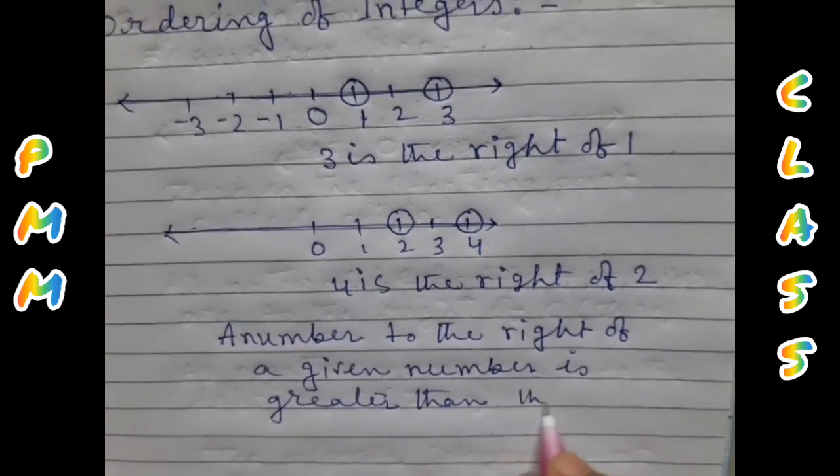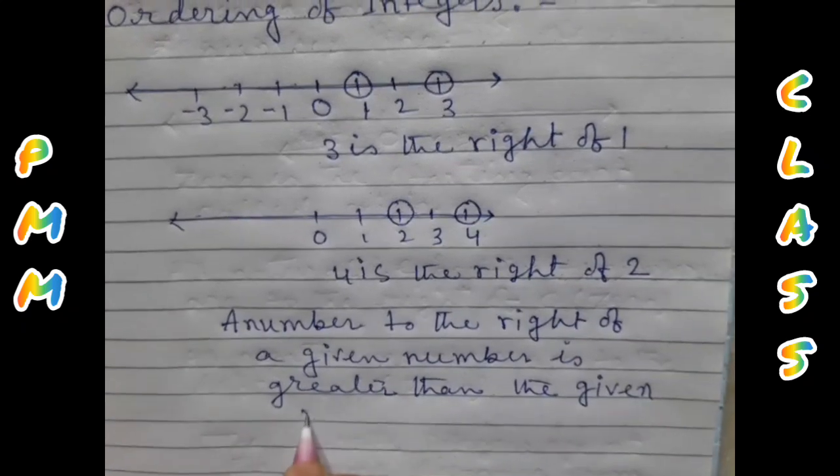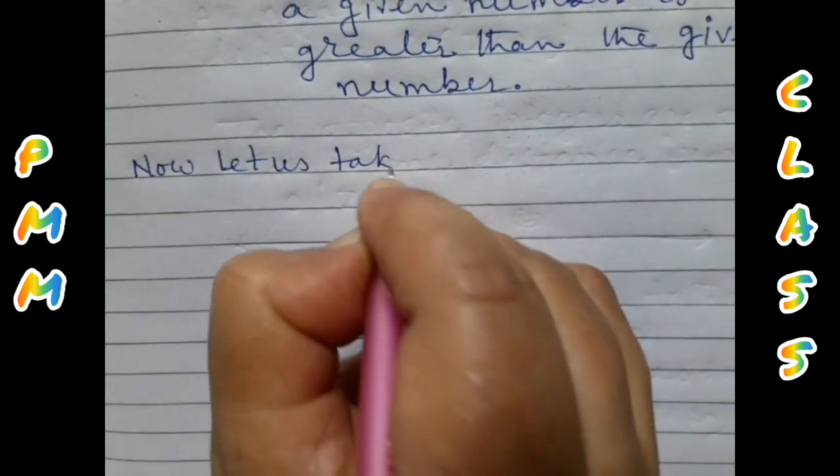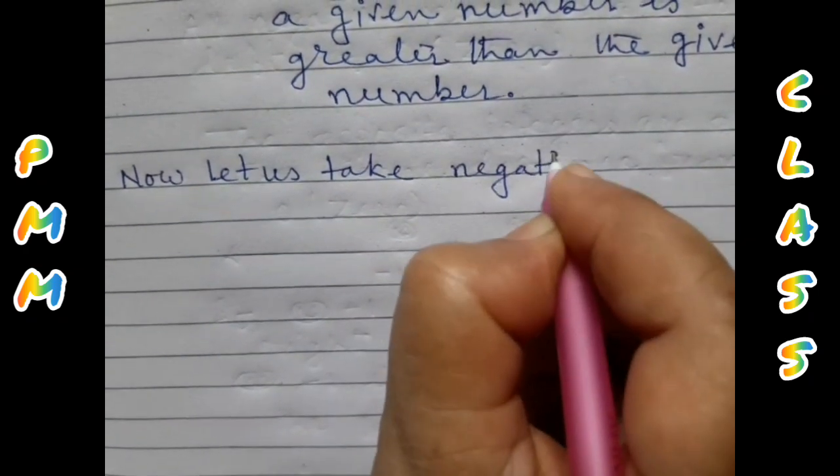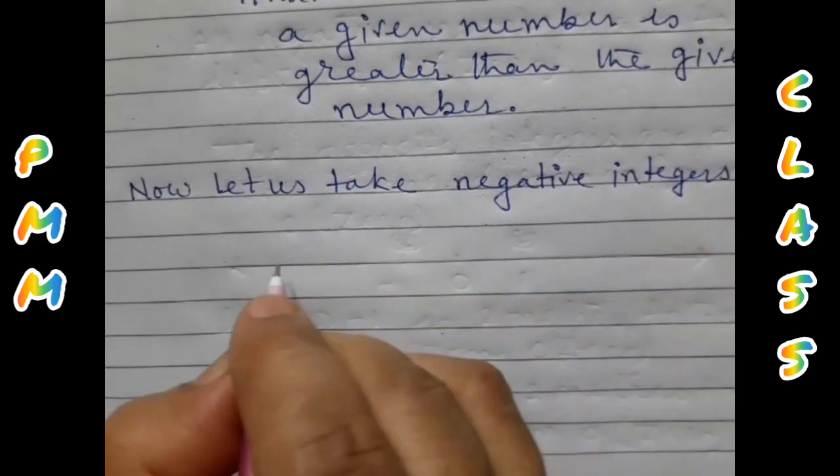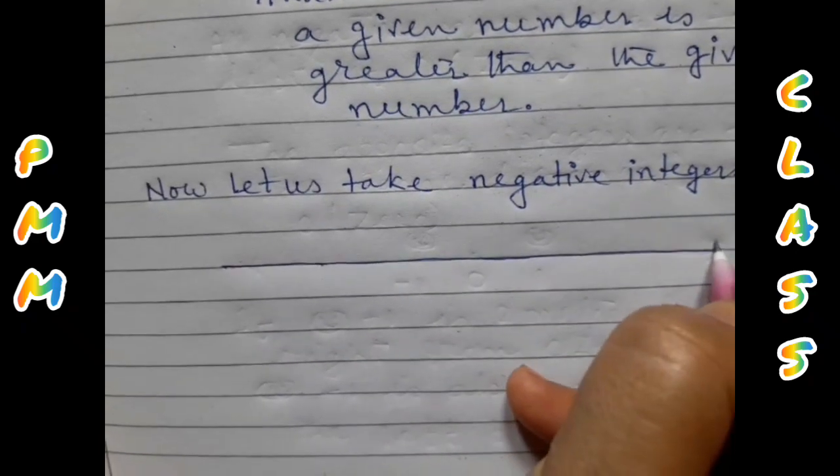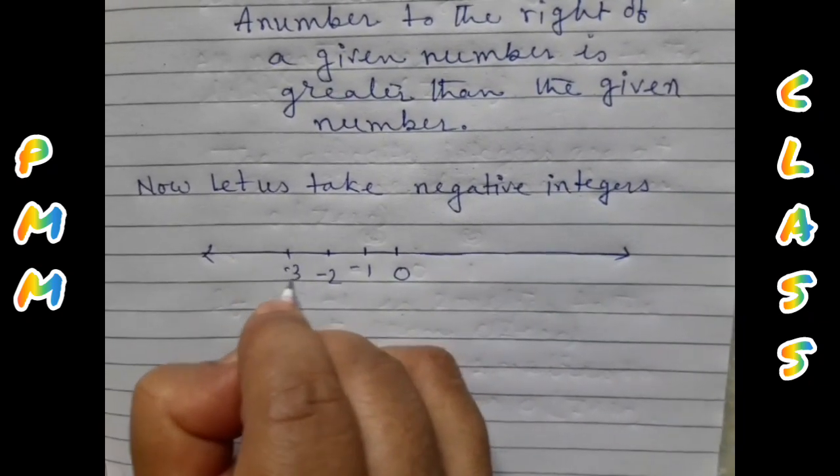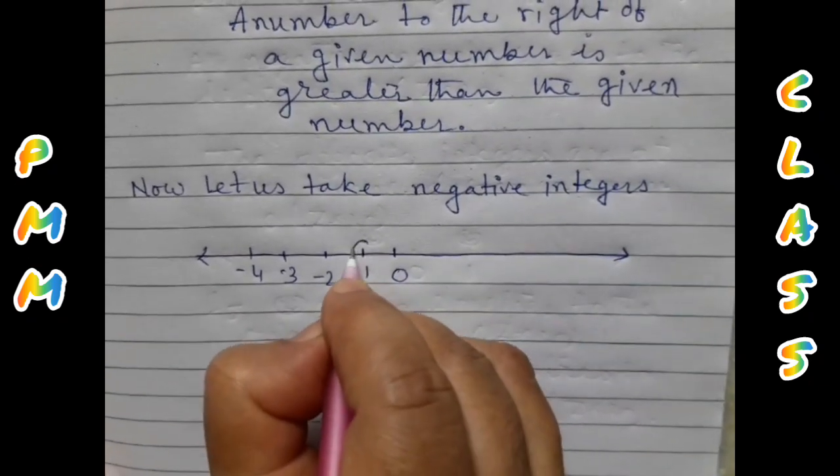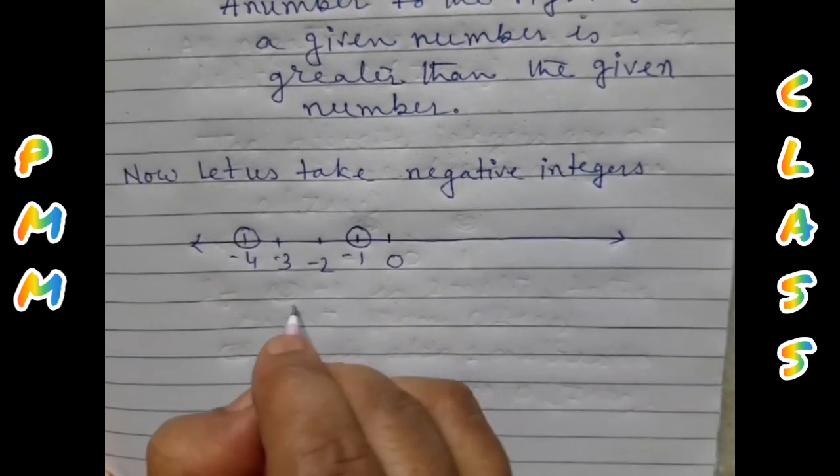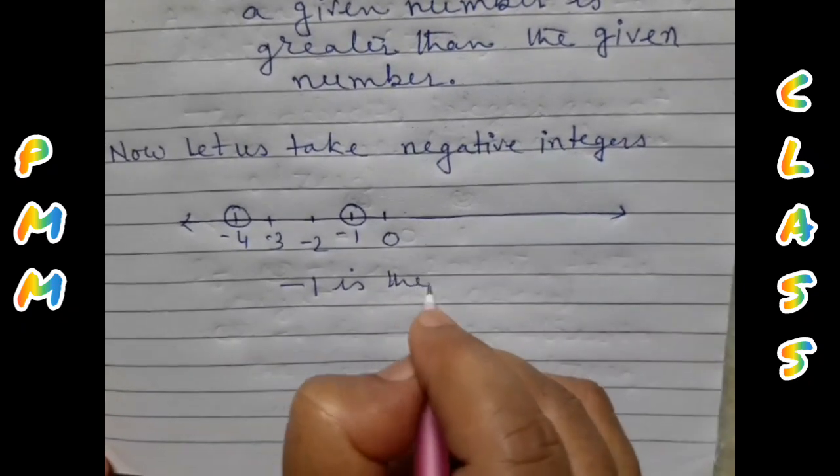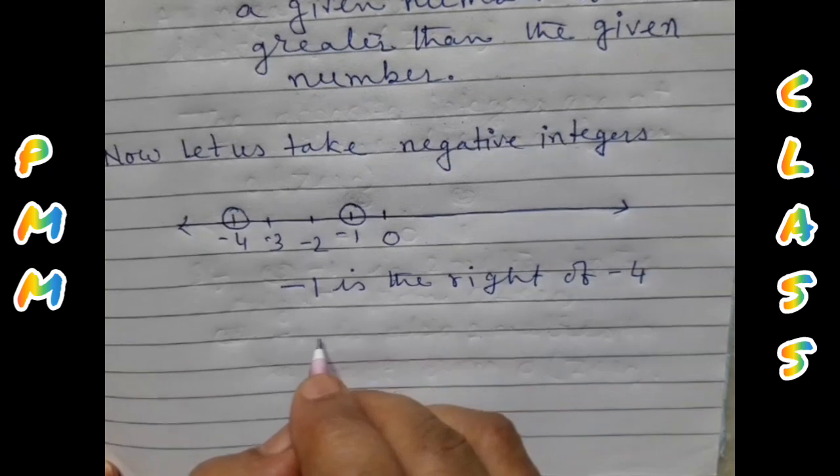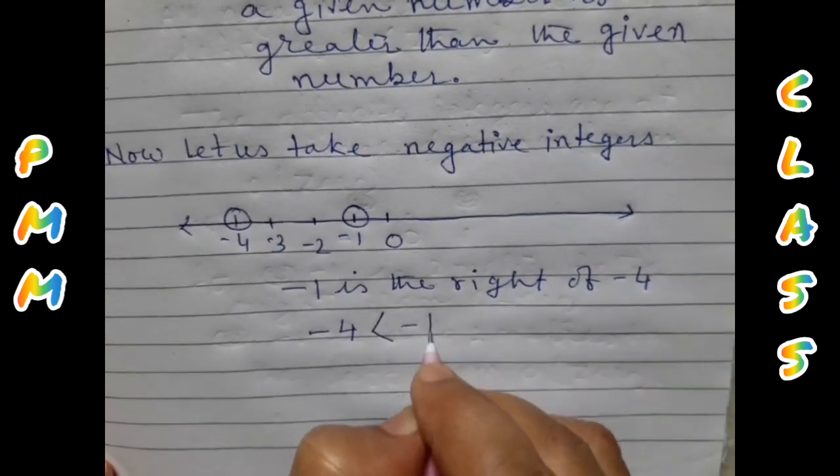Now let us take negative integers. Draw number line. This is 0, that is origin. Minus 1, minus 2, minus 3, minus 4, etc. Take minus 1 and minus 4. Minus 1 is to the right of minus 4. So minus 4 is less than minus 1.